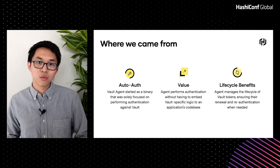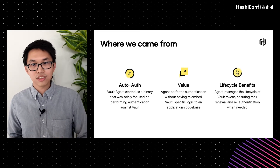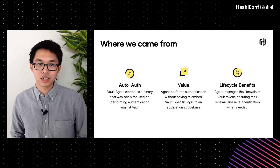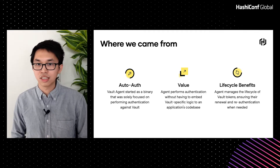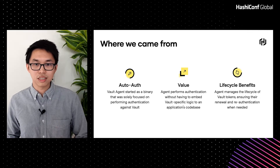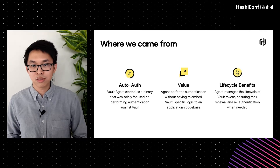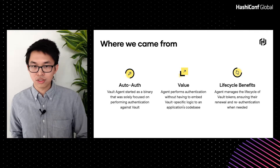Thank you, Arti. I'll be diving into the past, the present, and the future of Agent. Agent started as an additional mode of operation within the Vault binary that was solely focused on performing authentication against Vault — nowadays known as AutoAuth. The main value it provided was that it allowed third-party and legacy applications to interact with Vault without having to embed any Vault-specific logic into their code base, since updating an application code base was sometimes not desired, not permitted, or simply impossible if that application is not owned by the organization.